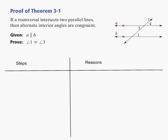Hello, we are going to do a proof of a theorem that says that if a transversal intersects two parallel lines, then alternate interior angles are congruent. In our book it's theorem 3-1, but you can just consider it sort of the alternate interior angles theorem.